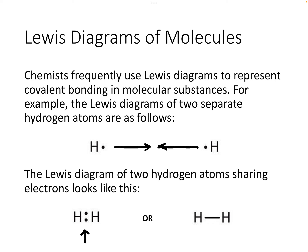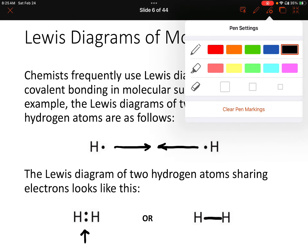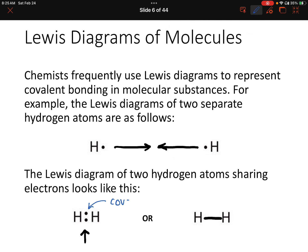You could also represent those two dots as just a line between the two atoms. Either way, those symbolize covalent bonds. If you prefer to show each individual electron, draw them as dots; if you want to show a bond as a line, that's fine too. Just remember that the line represents two electrons.